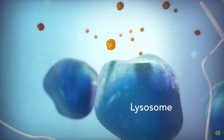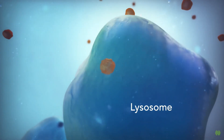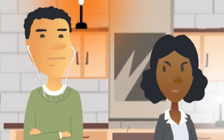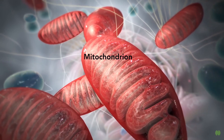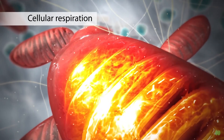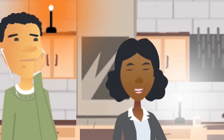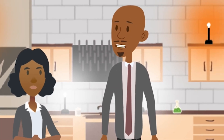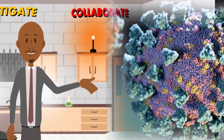Sometimes waste is produced from all of this protein synthesis and old cell organelle parts, and lysosomes help clean them up and dump them out of the cell — kind of like Lysol. All of these processes require energy, and the mitochondria produce ATP, which the cell uses to keep everything running.